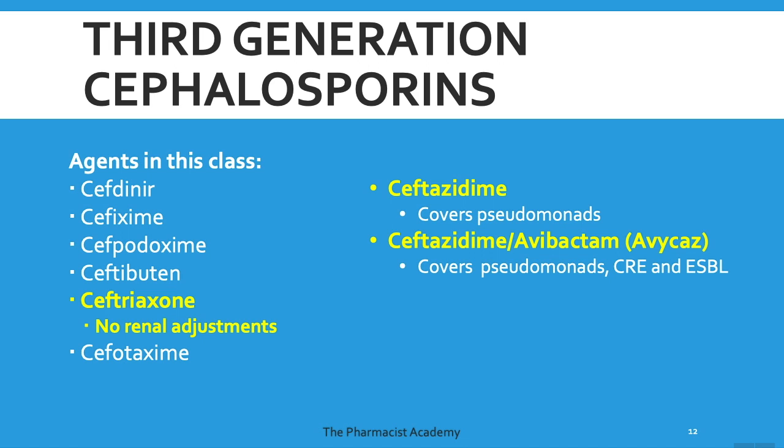Here are the agents in the third-generation class. Ceftriaxone is very popular in clinical practice because there are no renal adjustments required compared to some other medications in this class. Ceftazidime has Pseudomonas coverage. Any antibiotic that covers resistant organisms, you must know it. We also have the combination of ceftazidime with avibactam, a beta-lactamase inhibitor, called Avycaz — this covers Pseudomonas, CRE, and ESBL, so it basically does it all.